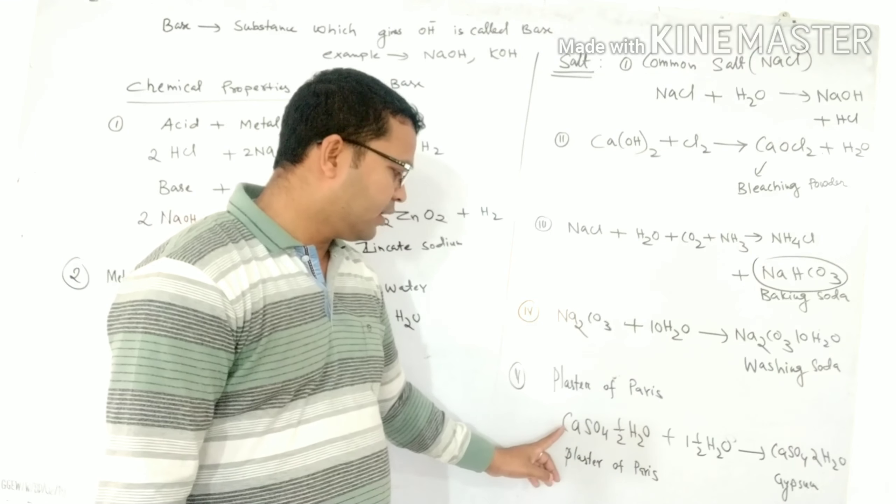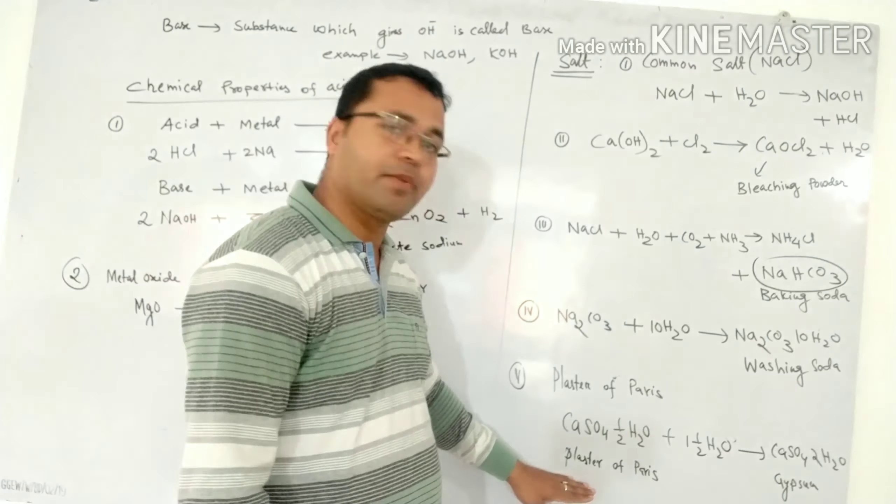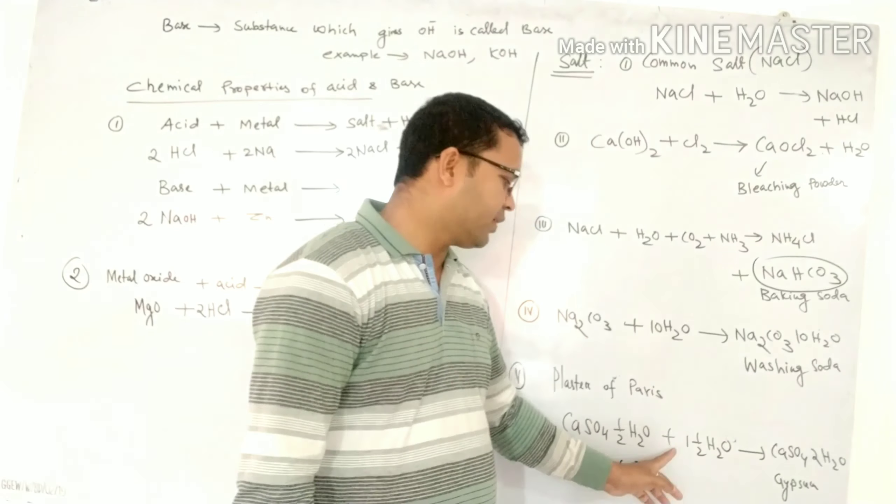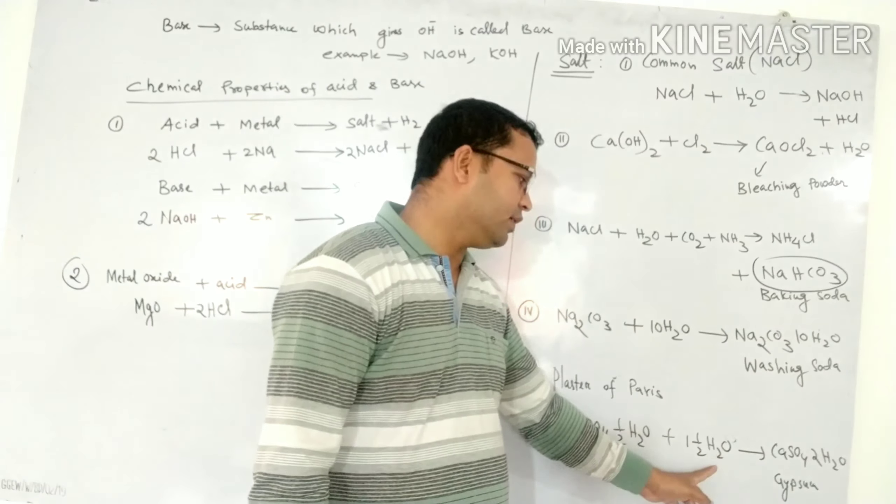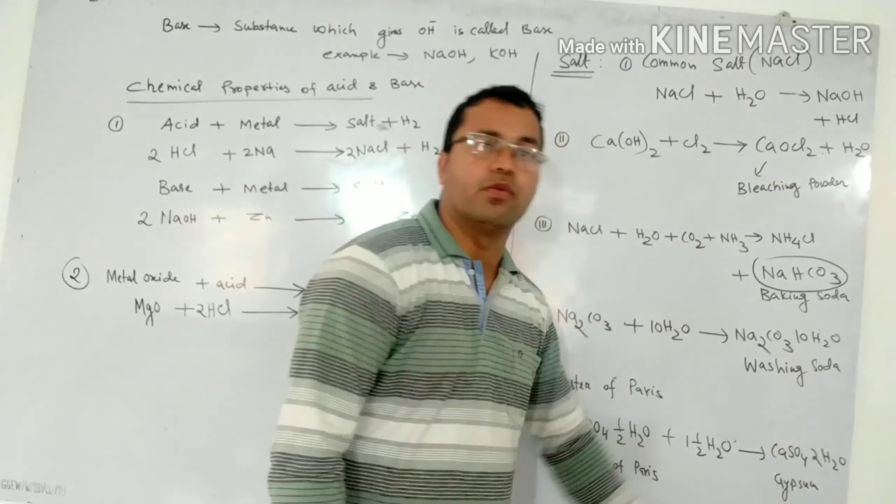And last one is plaster of paris, CaSO4 half H2O. This compound is called plaster of paris. Plaster of paris react with one and half water gives gypsum. The formula of gypsum is CaSO4·2H2O.